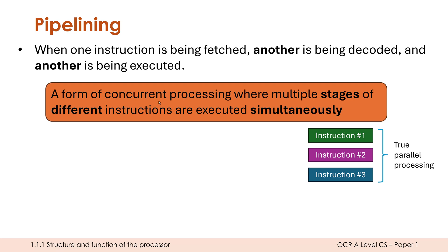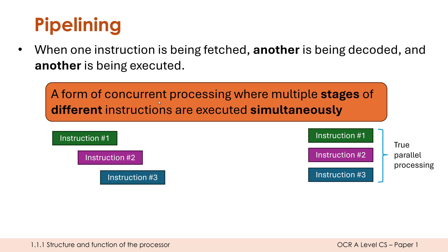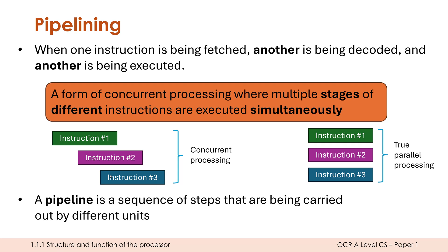Concurrent processing is where different instructions are carried out in overlapping time periods. So instruction one starts, then while it's still finishing, instruction two begins. Then while both are finishing, instruction three starts. They are not doing exactly the same thing at exactly the same time — instruction one might be fetching while instruction two is being fetched later, then one is executing while two is decoding and three is fetching. A pipeline is simply a sequence of steps carried out by different units.